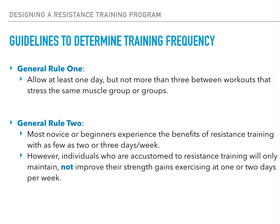On the other hand, those who are considered to be at the intermediate or advanced level aren't likely to see improvements in their strength training if they're only working out two or three times per week. They will, however, have a better opportunity to maintain their strength gains by working out two or three times per week.